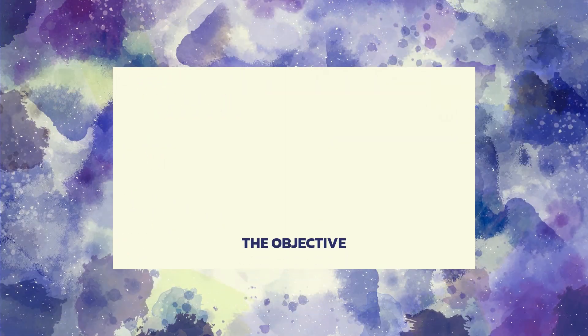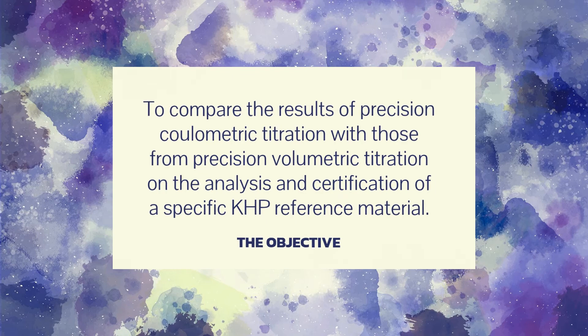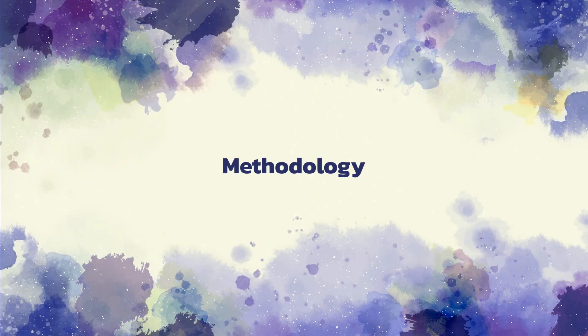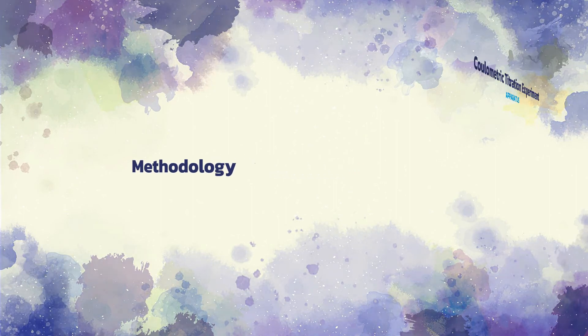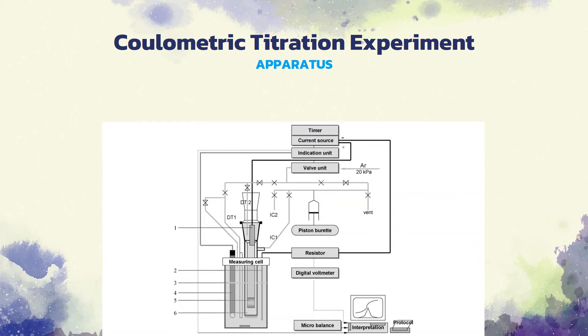The aim of this study was to compare the results of precision coulometric titration with those from precision volumetric titration on the analysis and certification of a specific KHP reference material. The methodology is divided into two parts: first, purity determination using precision coulometry; then, purity analysis using volumetric titration. For the coulometric titration experiment, the determinations were carried out using the system given in figure 1, which includes a titration cell with the following specifications.